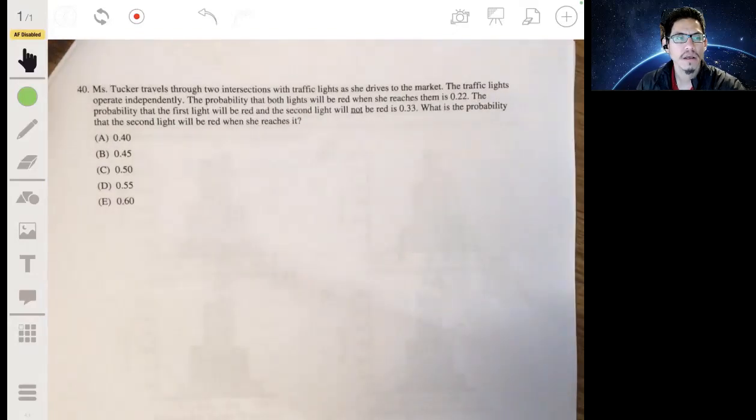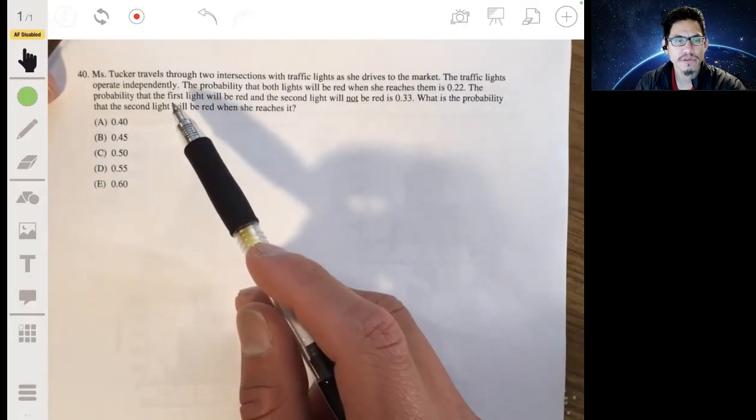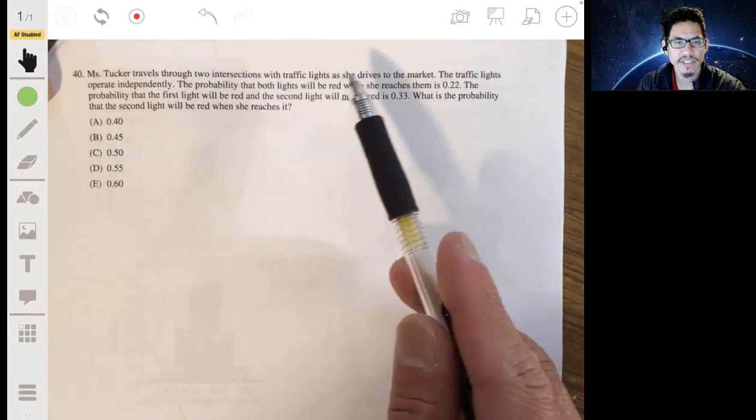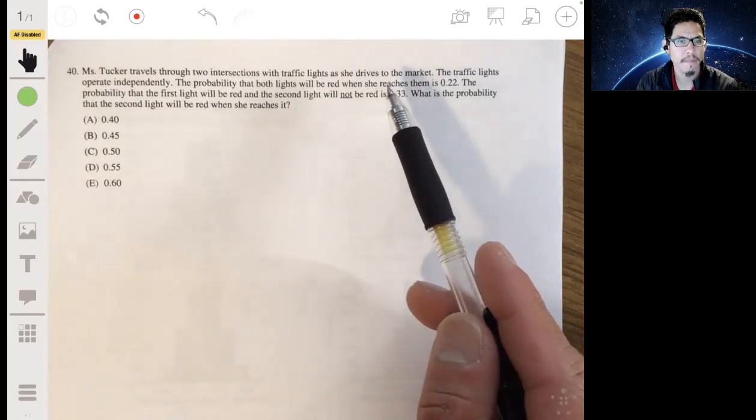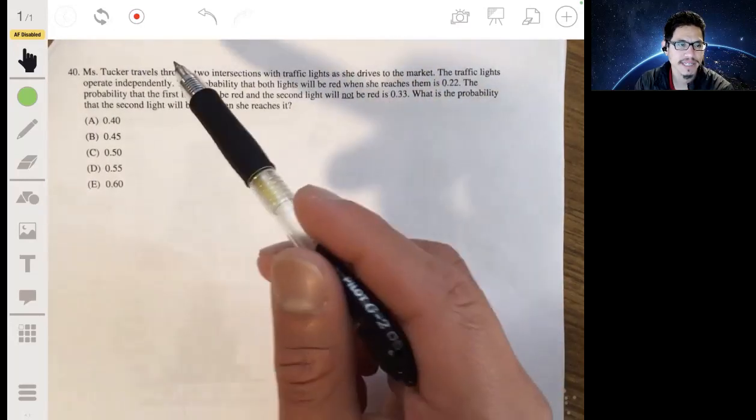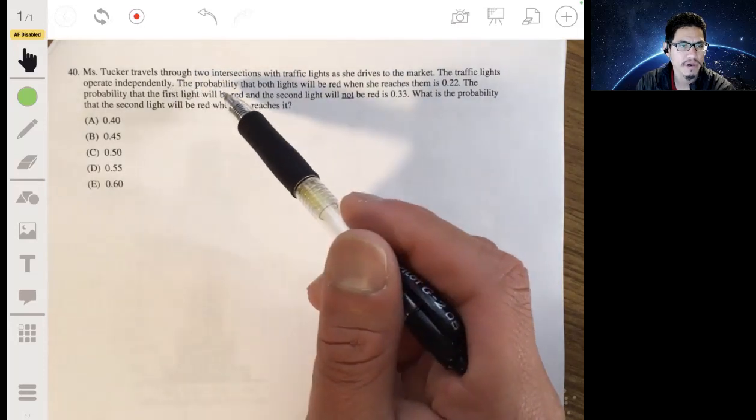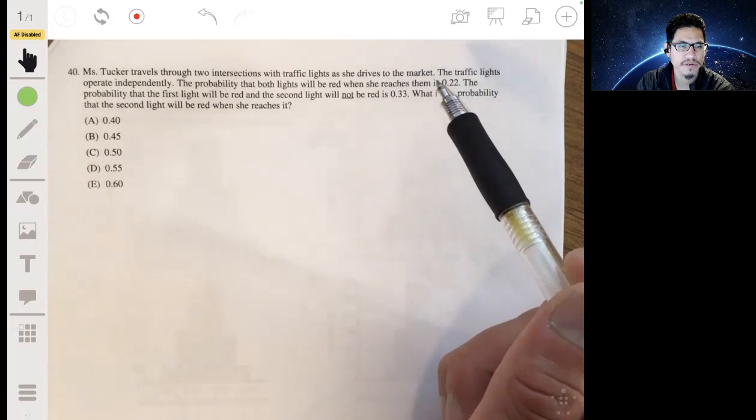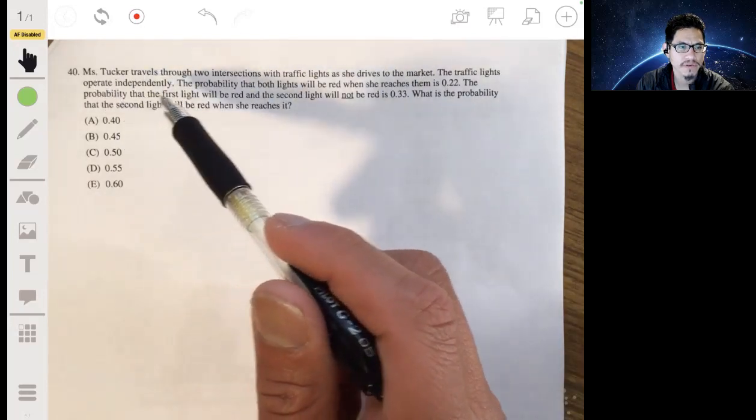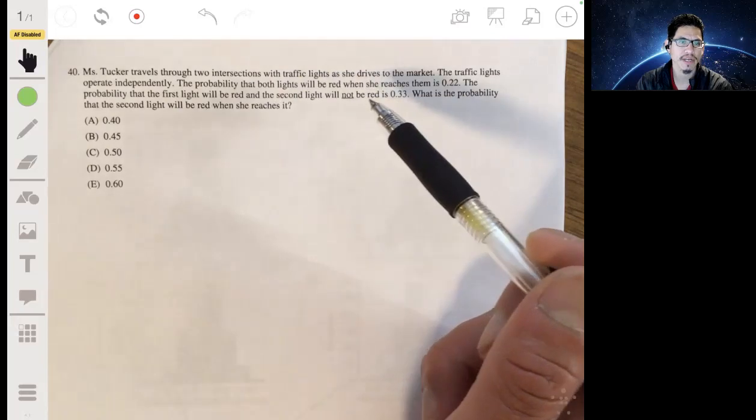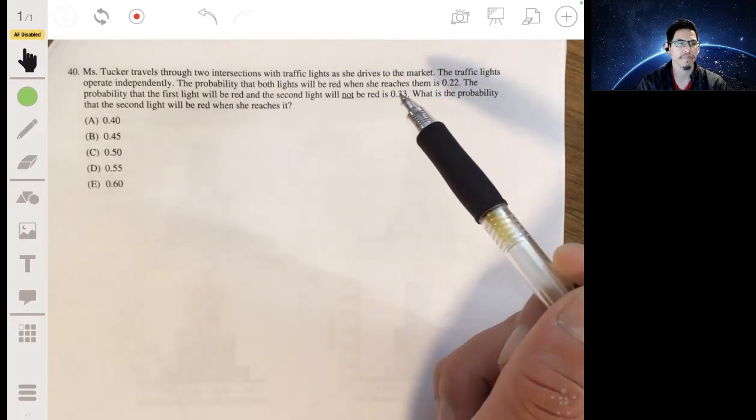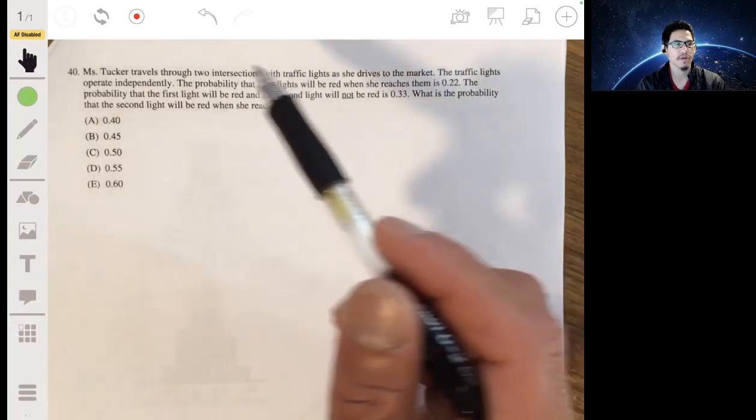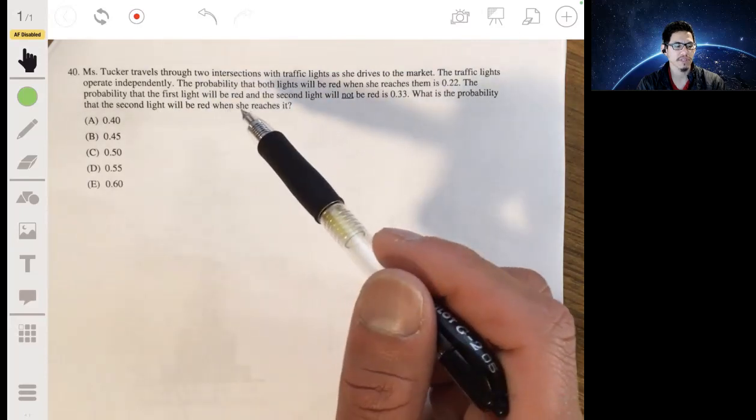So here we got Ms. Tucker travels through two intersections with traffic lights as she drives to the market. The traffic lights operate independently. The probability that both lights will be red when she reaches them is 0.22. The probability that the first light will be red and the second light will not be red is 0.33. What is the probability that the second light will be red when she reaches it?